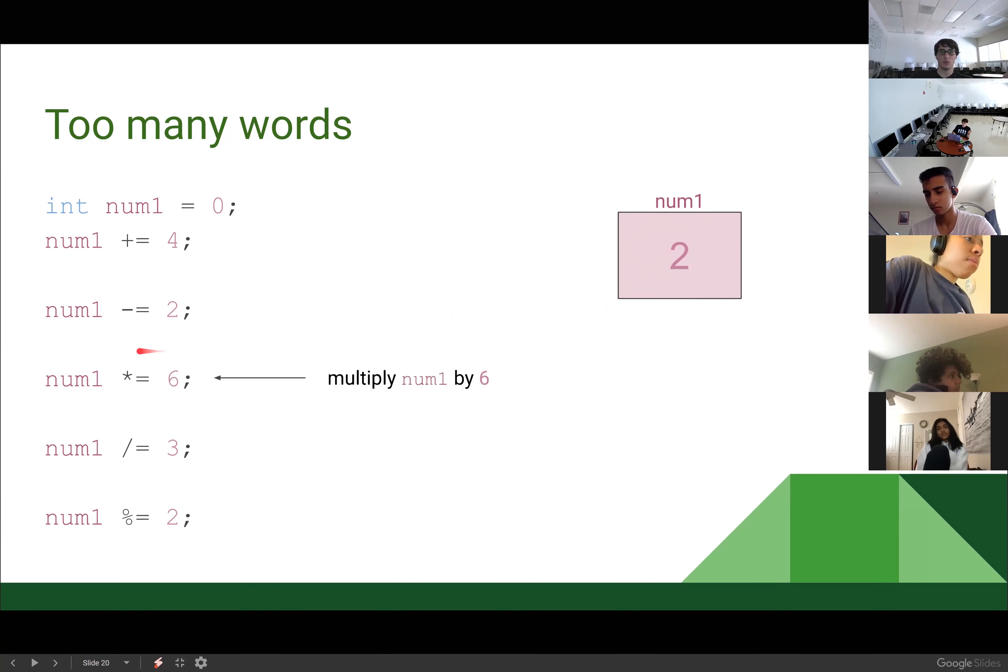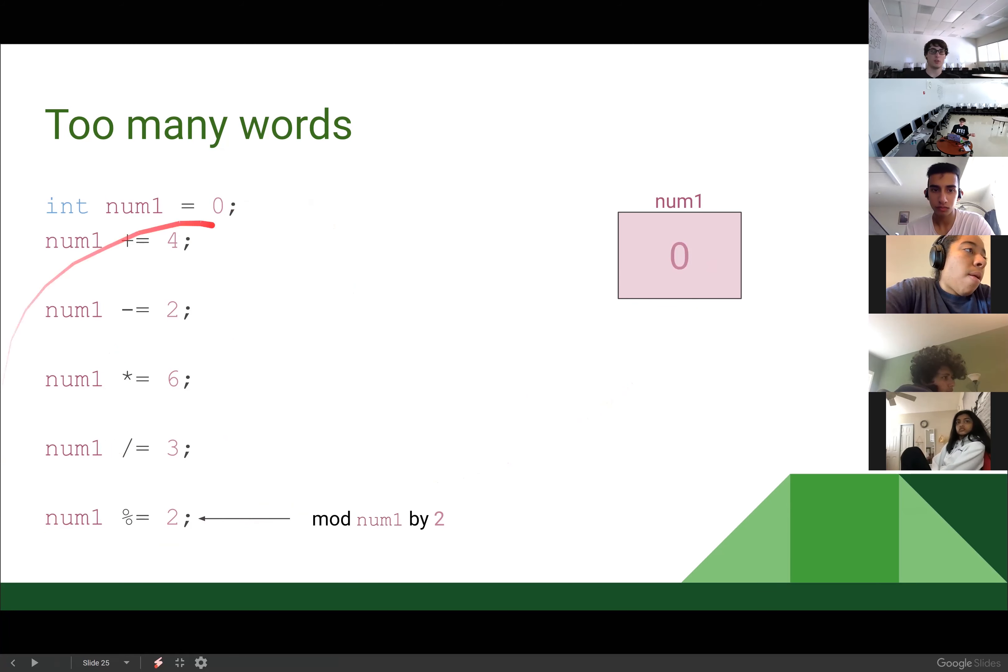Now we're going to do asterisk equals or multiply equals. So we're going to multiply the value in num1 by six. Two times six is 12. Then we're going to divide equals. We're going to divide by three. 12 divided by three is four. And num1 mod equals two. We're going to mod our number or our num1 value by two. So four mod two is zero. And look, we have a circle. Does how we use this shorthand make sense?